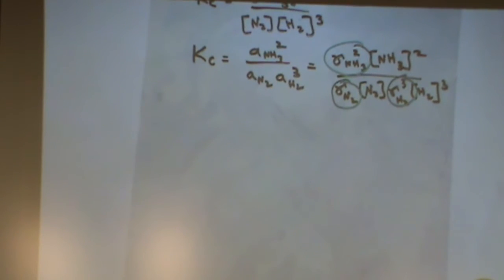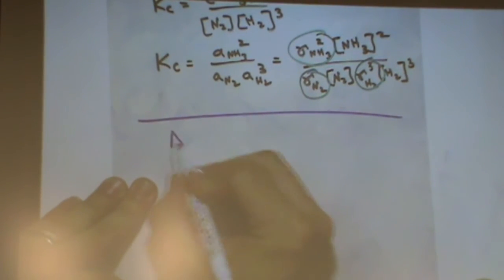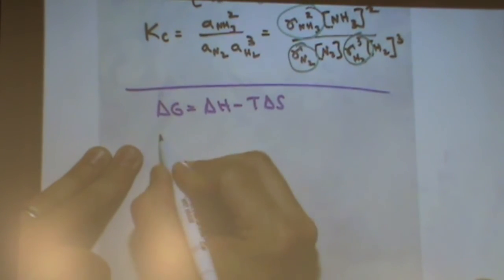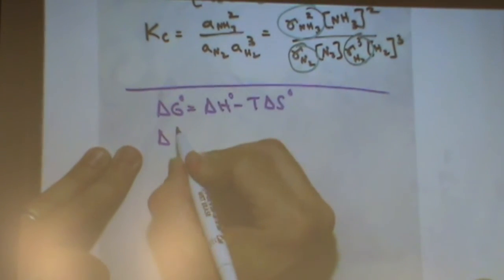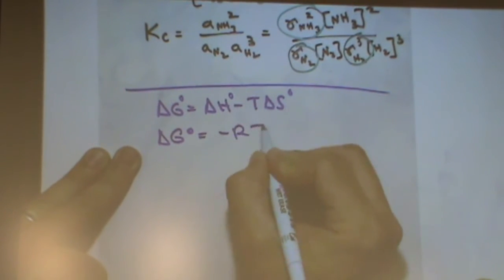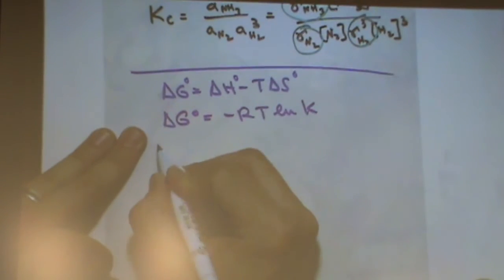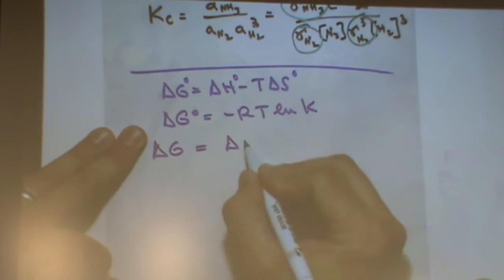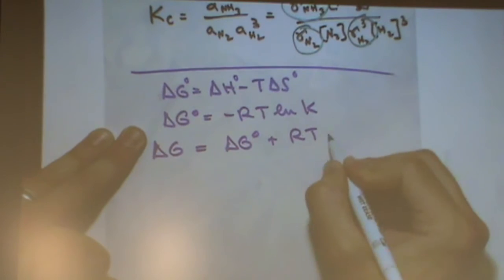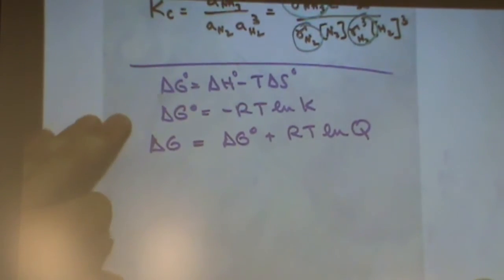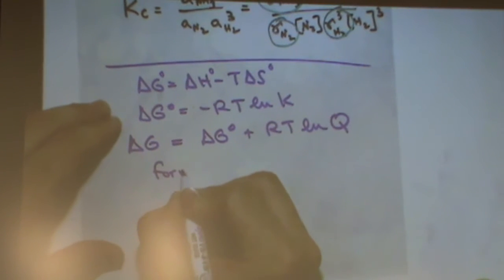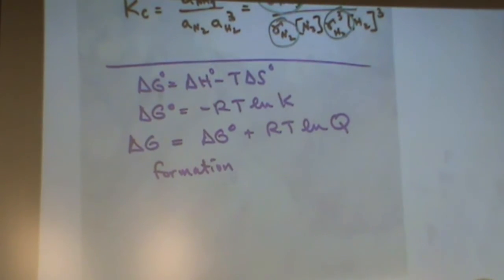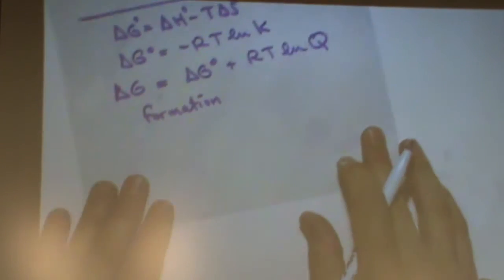There's just a couple of equations to know as far as the N part for thermo. So there's the delta G equals delta H minus T delta S. And then there can be standards here. There can be no standards there or standards. This delta G has to have a standard. Delta G is minus RT ln K.